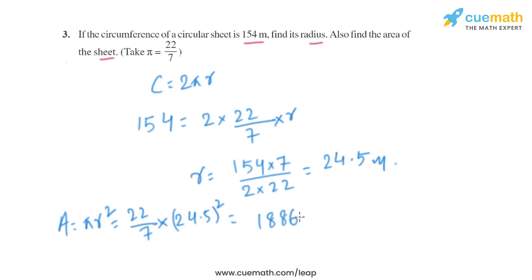So when we solve it, we will get the area of the circle as 1,886.5 square meters. So that will be the area of the circle.